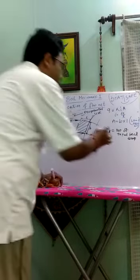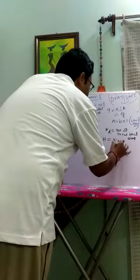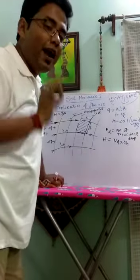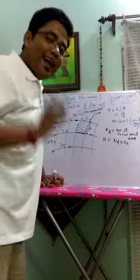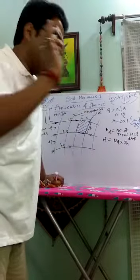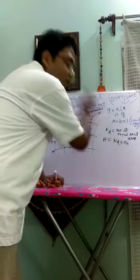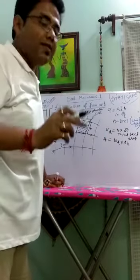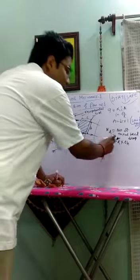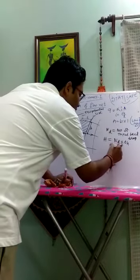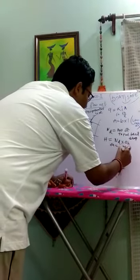Then we can say ND into del H. Del H is the head drop at each point and ND is the total number of head drops. Then total head drop capital H equals ND into del H. Then del H equals H by ND.